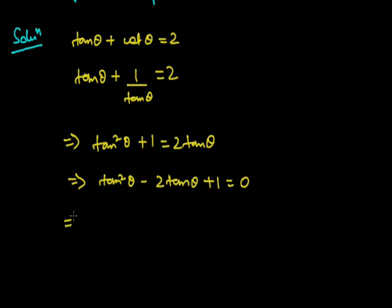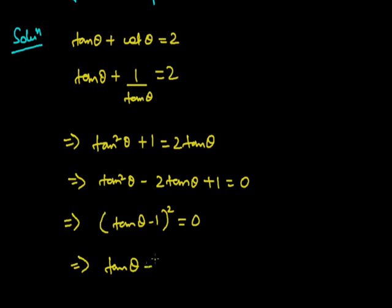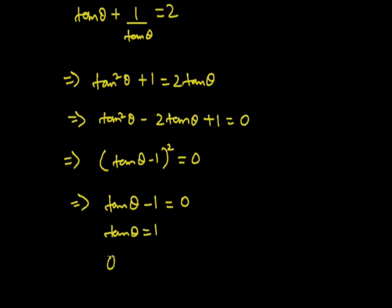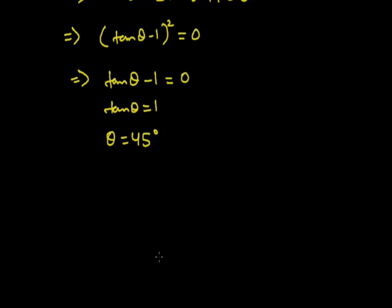We can write tanθ + cotθ = 2, which gives tan²θ - 2tanθ + 1 = 0. This is in the form of (tanθ - 1)² = 0, so tanθ - 1 = 0, meaning tanθ = 1. Therefore θ = 45°, since tan45° = 1. Now we need to find tan⁹θ + cot⁹θ.